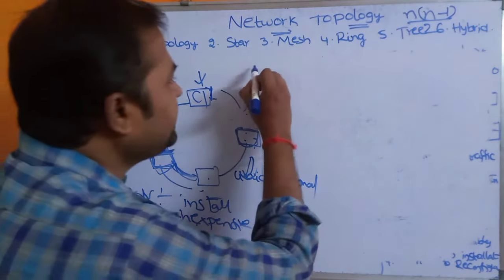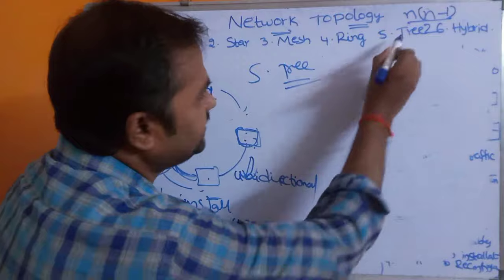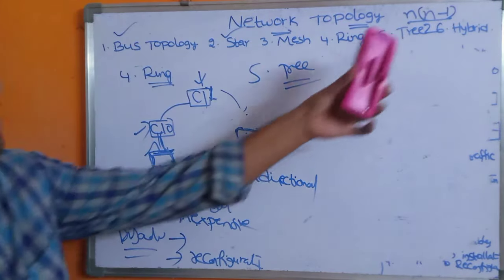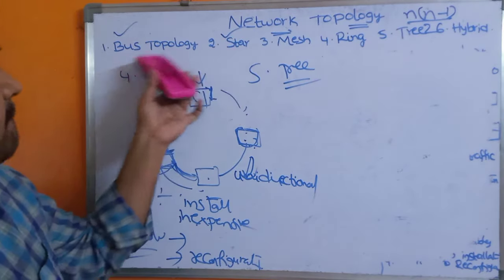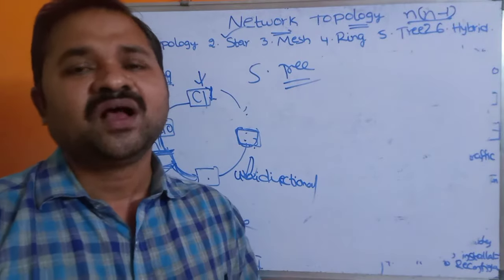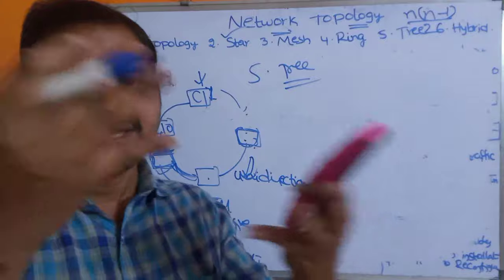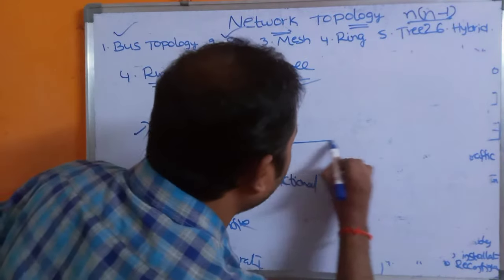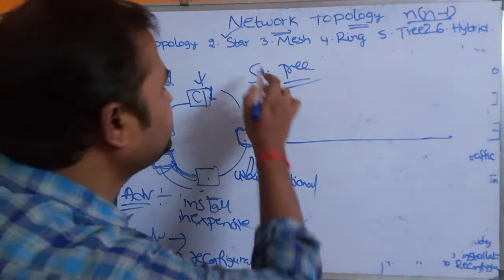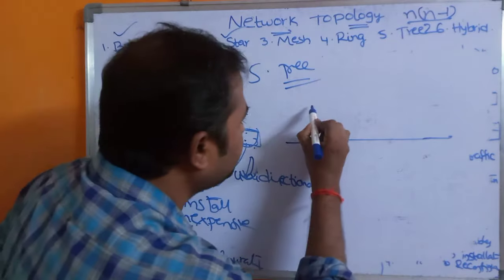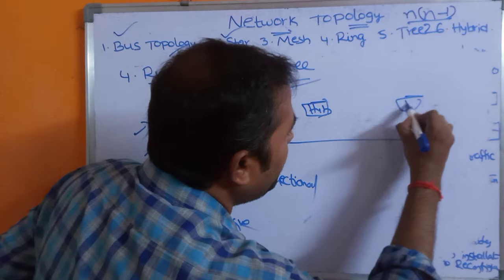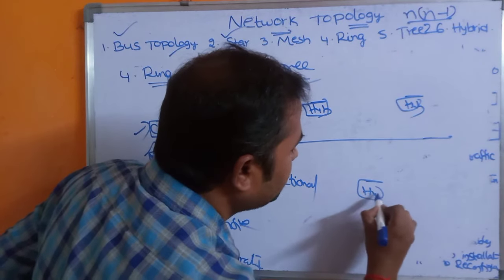The fifth topology is tree topology. Tree topology is a combination of bus and star topology. Like a tree structure used to represent hierarchical information, it has multiple levels. There is a long cable similar to bus topology, and hubs are connected along it similar to star topology. So tree topology combines the features of both bus and star topologies.